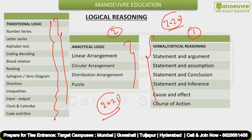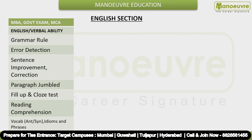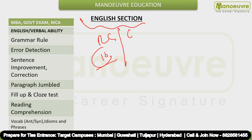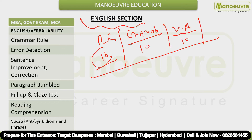The next scoring section is English. RC has 10 fixed questions. Grammar plus Vocab combined gives 10 questions, and Verbal Ability — including fill in the blanks, paragraph jumbles, and phrase-based questions — gives another 10 questions. That is the clear breakup of the English section. Make sure you are thorough with all grammar rules: sentence improvement, correction, paragraph jumbles, fill in the blanks — both double and single — and RC. Cover all of these well.